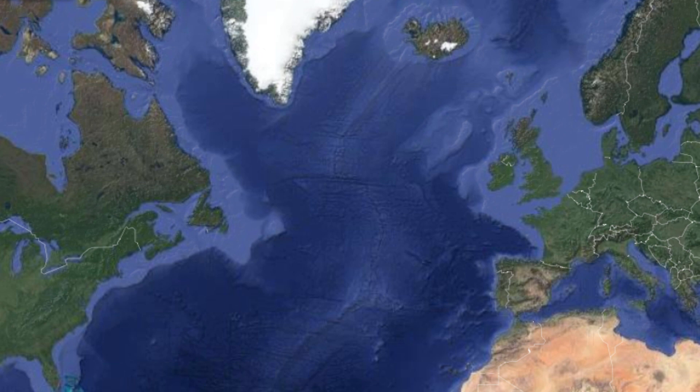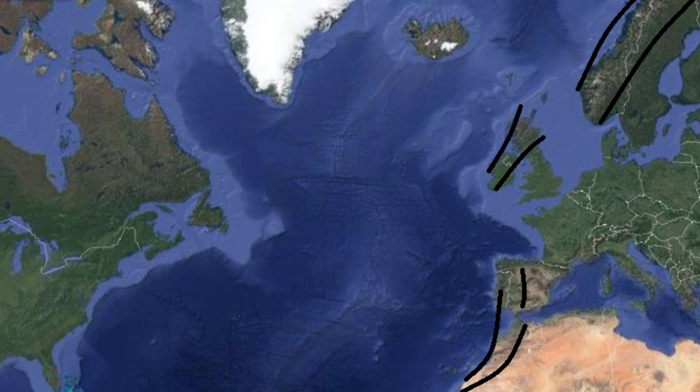Mountain ranges can be pieced back together to show that they were once one large mountain range. At first glance, mountains in Africa, the British Isles, Scandinavia, Greenland, and the Appalachian Mountains all appear to be separate mountain ranges. But when you put the continents all back together, it is easy to see that at one time they were all pieced together as one large mountain range.